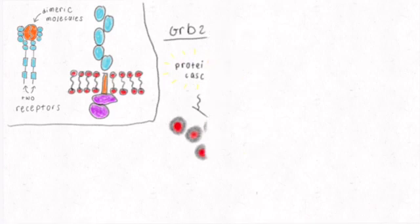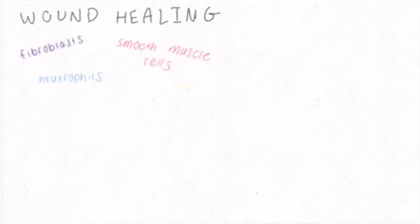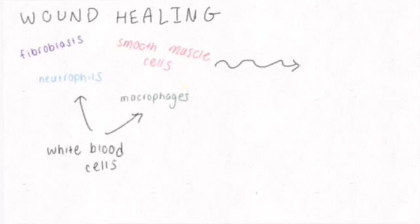PDGF receptors are expressed by cell types involved in wound healing, such as fibroblasts, smooth muscle cells, neutrophils, and macrophages. The latter two are types of white blood cells.